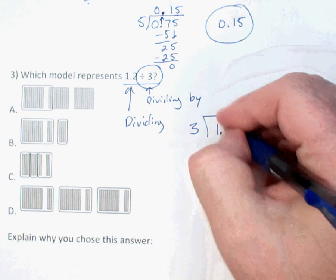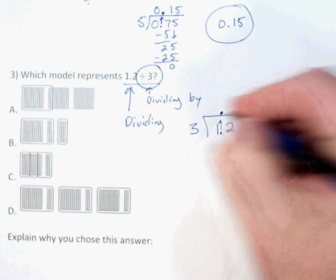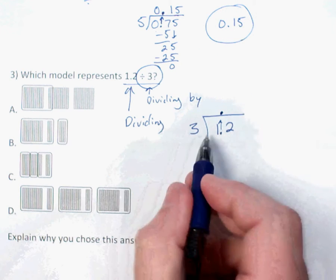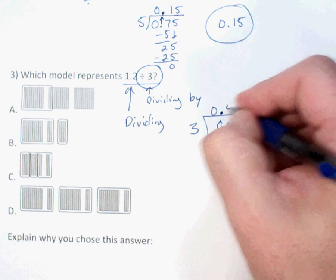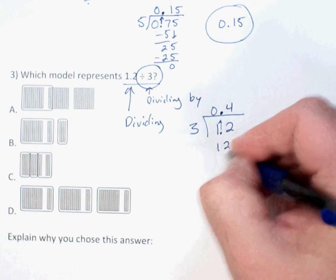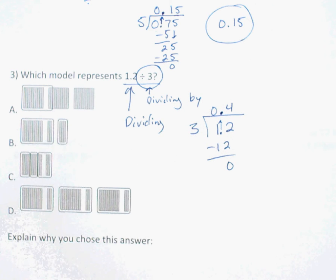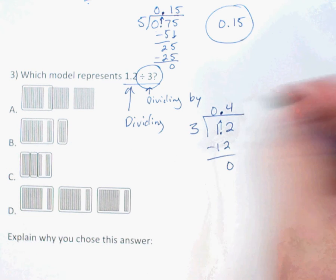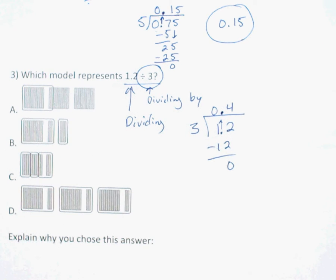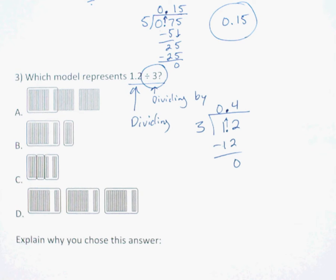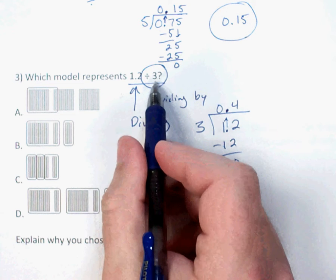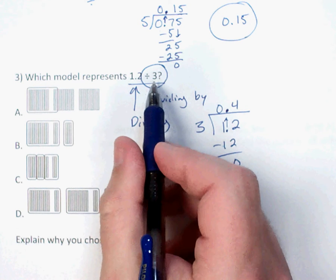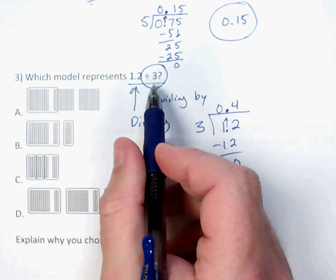I'll put my decimal up so I don't have to worry about it at the end. Three will not go into one. Three goes into twelve four times — no remainder. So my answer is four tenths. That will help me figure out which model goes with which. I'm dividing by three, so it has to be cut into three pieces.